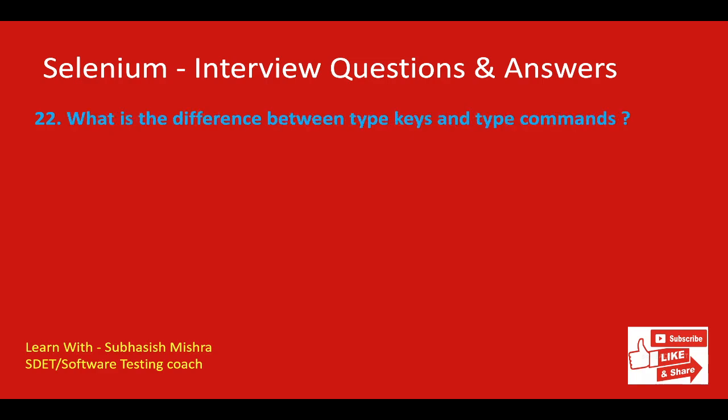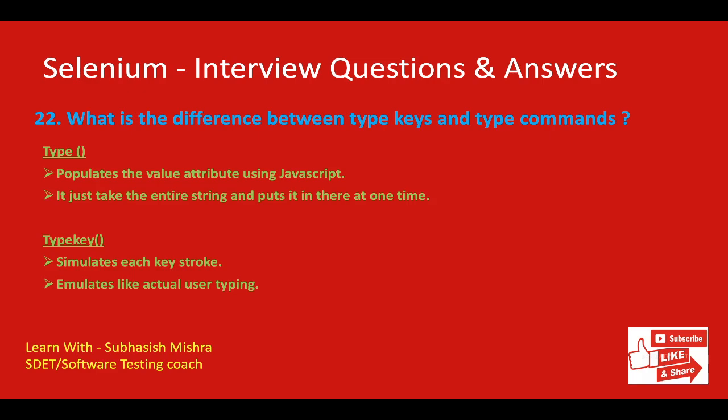What is the difference between type and typeKeys commands? The type command populates the value attribute using JavaScript — it takes the entire string and puts it in the field at one time. typeKeys simulates each keystroke and emulates actual user typing. So typeKeys gives the experience of a real user typing, while type simply inputs the complete string directly all at once.